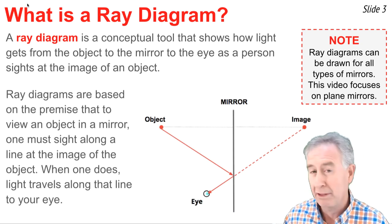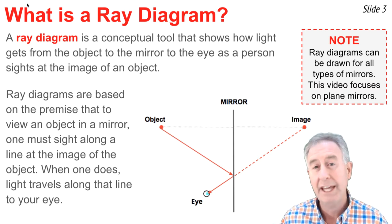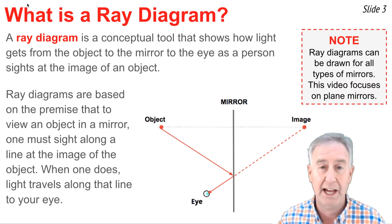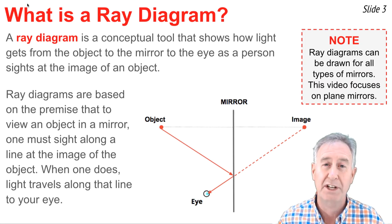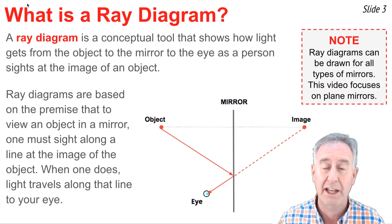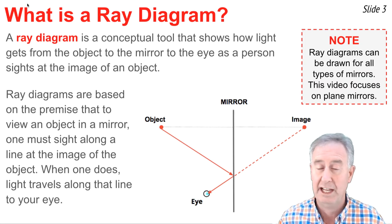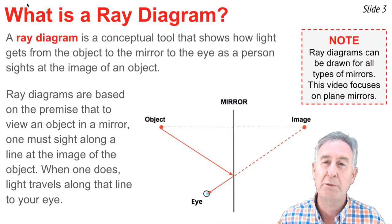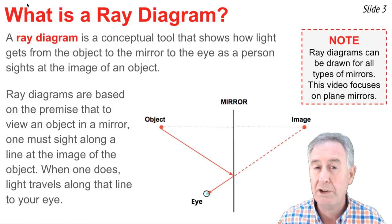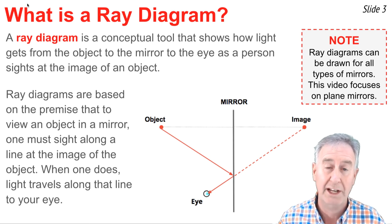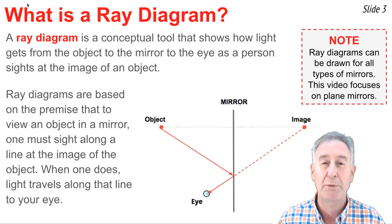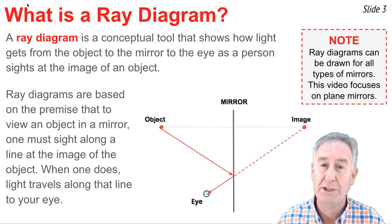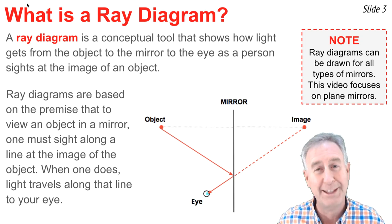This is a ray diagram. You'll notice that there's a mirror, there's an object, an image, and then there's an eye. There are a couple of rays drawn that show how light gets from the object to the mirror to the eye as the person sights along a line at the image of that object. Ray diagrams are based upon that very premise: in order to see the image of an object, one must sight along a line at that image location, and when one does, light comes to the person's eye along that line of sight.